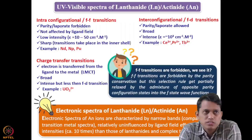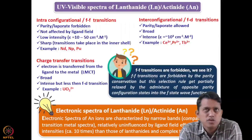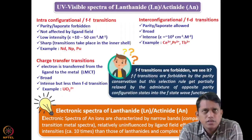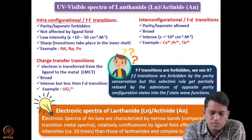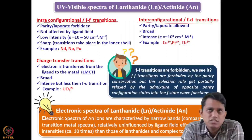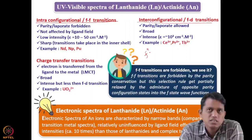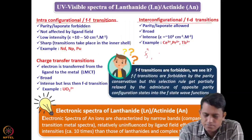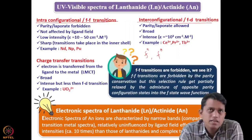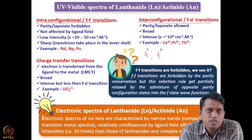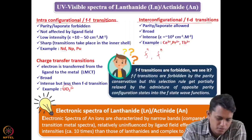Hello everyone and welcome back to the series of lectures on actinide chemistry. In the last lecture we discussed term symbols and how we measure the UV-visible spectra of lanthanides and actinides. We saw that three types of transitions are possible: intraconfiguration transitions (f-f transitions), interconfiguration transitions (f-d transitions), and charge transfer transitions. When you have electrons in the f orbital, both f-d and f-f transitions are possible, but when there are no electrons in the f orbital, the color we see mainly comes from charge transfer transitions. A good example is the uranyl ion.